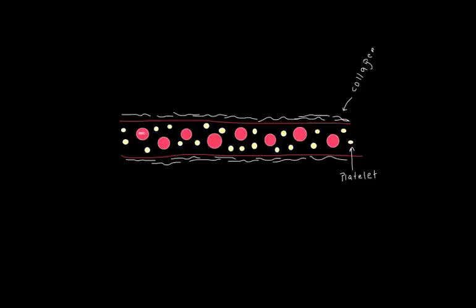In this picture, we have a blood vessel. This red line indicates the endothelial cells lining the blood vessel. Inside, we have some red blood cells, and these yellowish round things are platelets. On the outside of the cell, we have some collagen fibers.